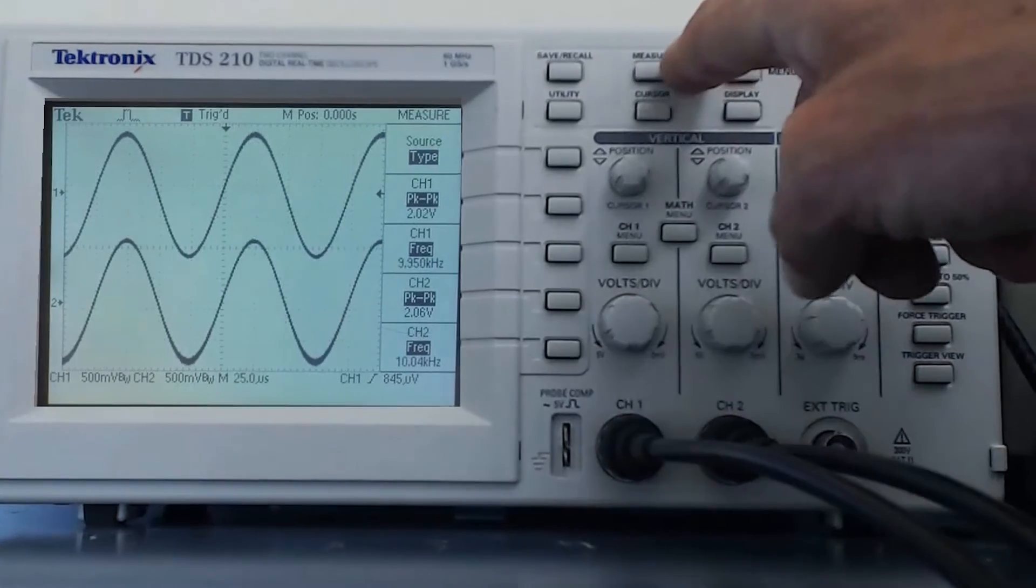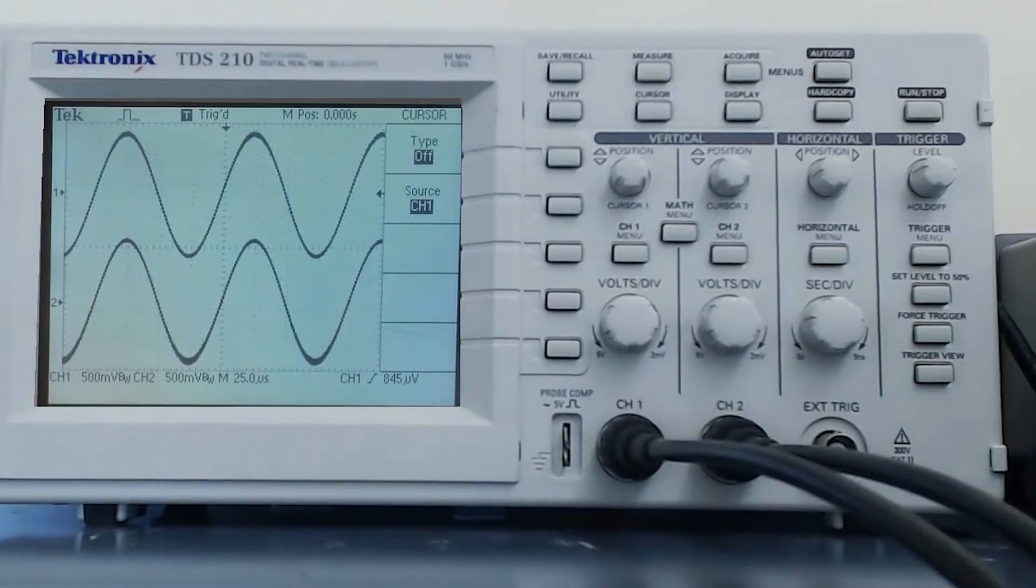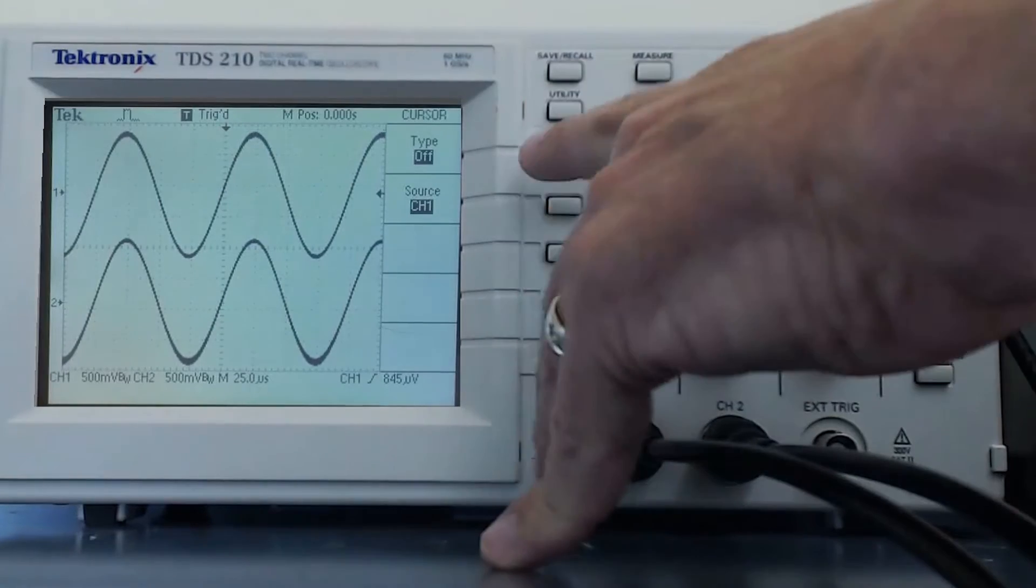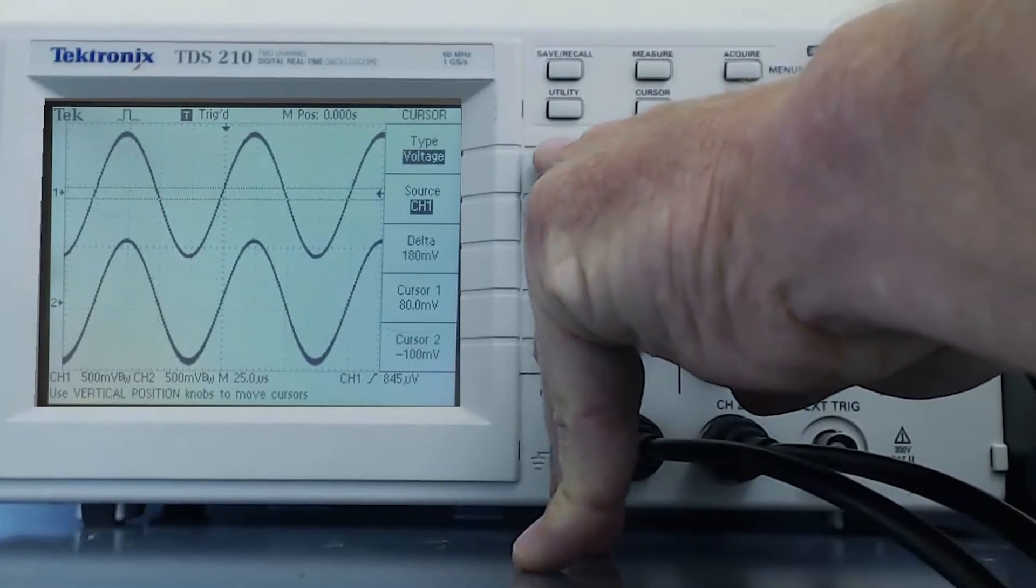The button below the measure button is the cursor button. The cursor button allows us to manually make measurements we want to make. There are two types of cursors we can use, voltage cursors and time cursors.